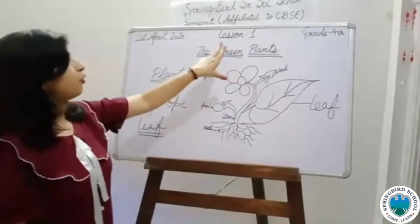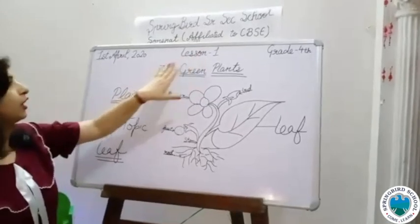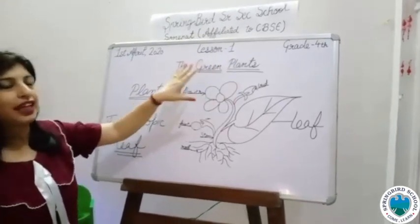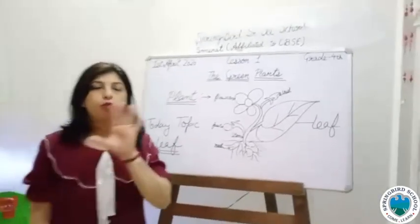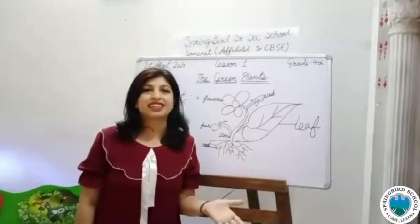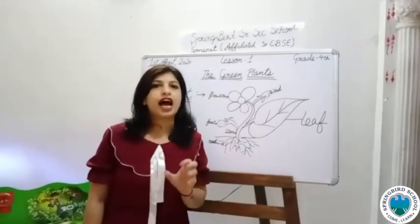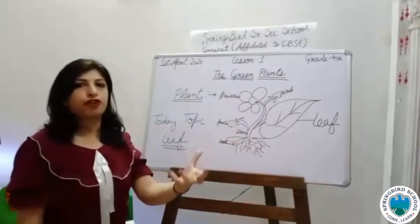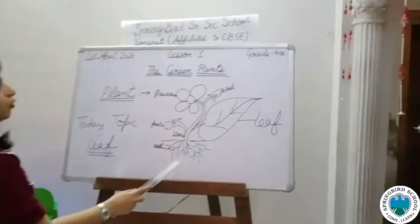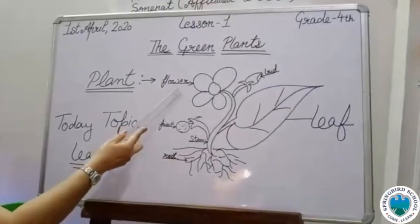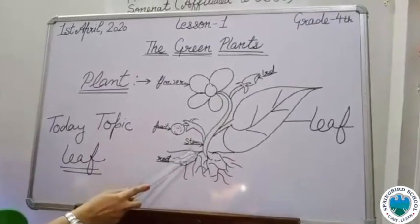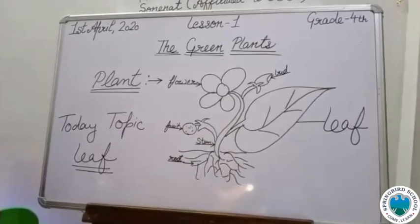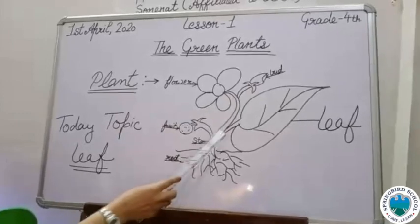So, in this chapter we will cover three things. The name of the first lesson is 'The Green Plants.' Today, first of all, let's think about what plants are. In the previous third standard environmental studies, we studied plants. As a quick revision — a plant has many parts: flower, fruit, stem, root, and leaf. Today we will read about the leaf.